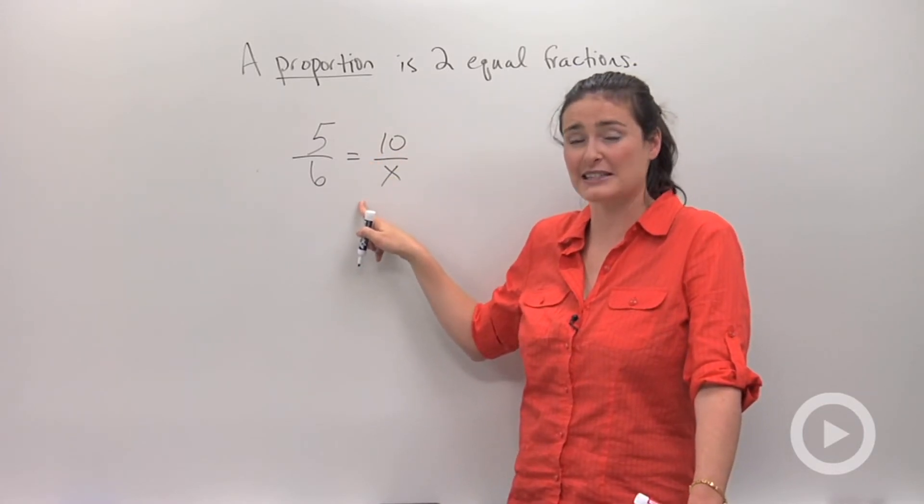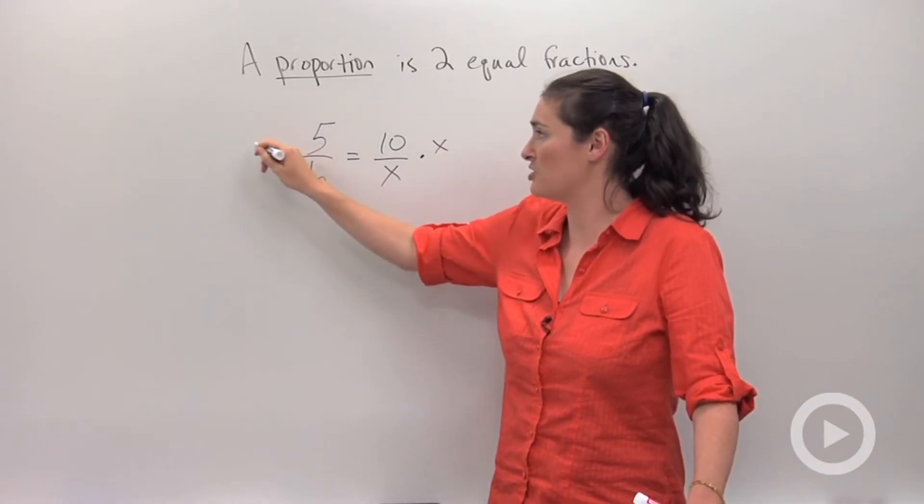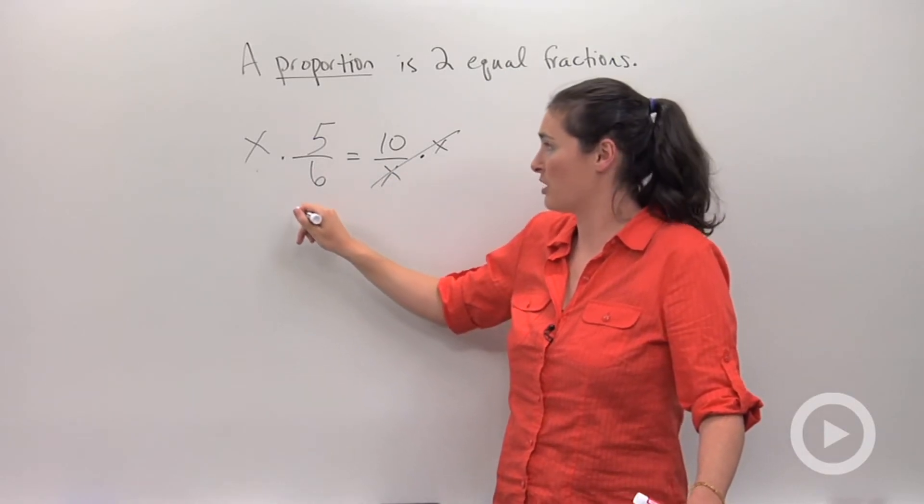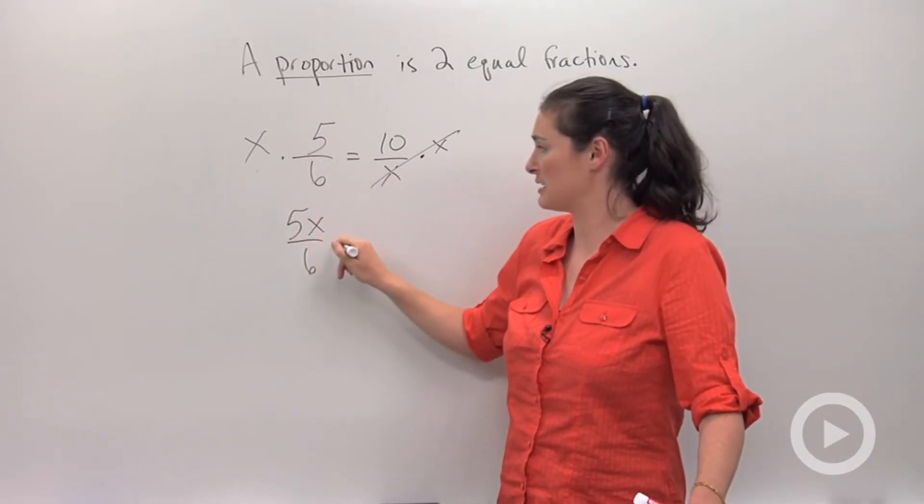If I wanted to get x out of the denominator, I would multiply both sides of the equation by x so that those cancel out. And then I would be working with the problem, 5x divided by 6 equals 10.